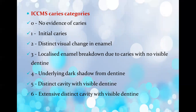The next question was about the ICCMS caries categories. The scoring criteria range from 0 to 6: 0 is no evidence of caries; 1 is initial caries; 2 is distinct visual change in the enamel; 3 is localized enamel breakdown due to caries with no visible dentine; 4 is underlying dark shadow from the dentine; 5 is a distinct cavity with visible dentine; and 6 is an extensive distinct cavity with visible dentine.